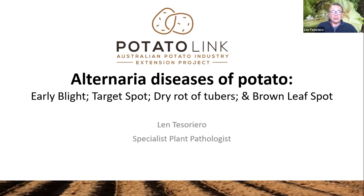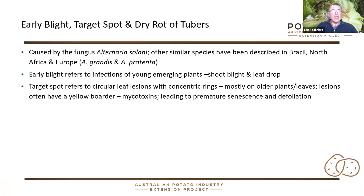I'm going to talk about Alternaria diseases in the potato. We commonly know that the key one is early blight or target spot. The descriptive names really refer to different parts of the disease caused by these Alternaria species. Early blight is the young stage and traditionally known to be caused by Alternaria solani.